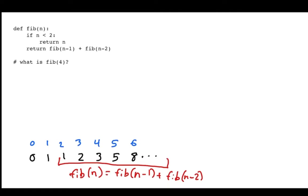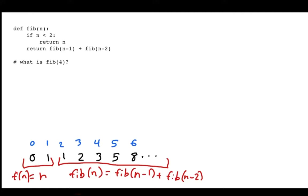That's for most of the numbers. Except for the beginning: the number at position 0 is 0, and the number at position 1 is 1. So the Fibonacci of n equals n for those cases. The code captures this: if n is less than 2, Fibonacci of n just returns n. Otherwise, we return the sum of the two previous numbers.